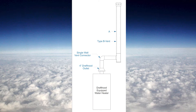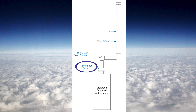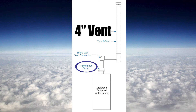The first example is very simple: one appliance being served by a vent. The rule of thumb states the size of the vent will be the same size as the draft hood outlet. I have a four inch draft hood outlet, so the size of the B vent will be four inch.